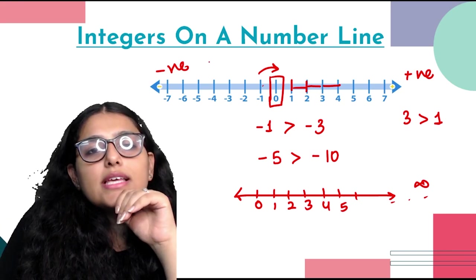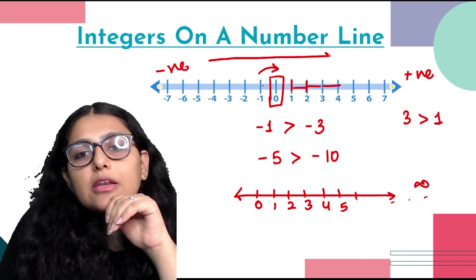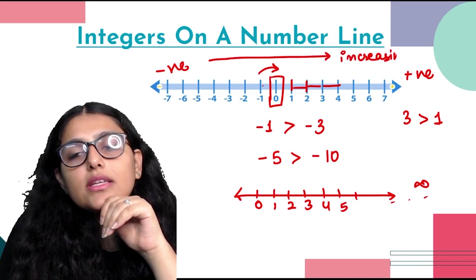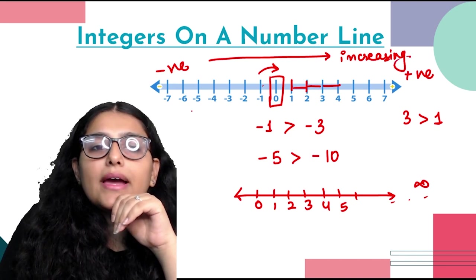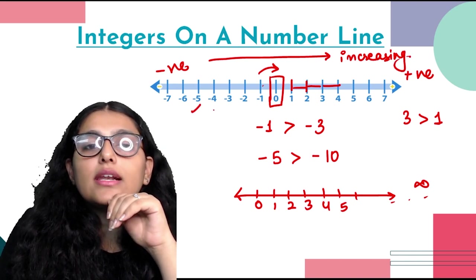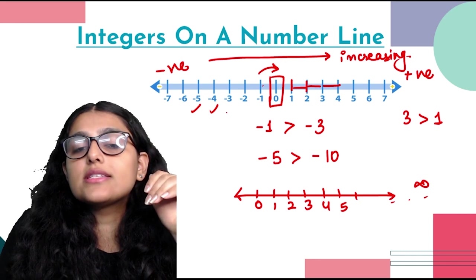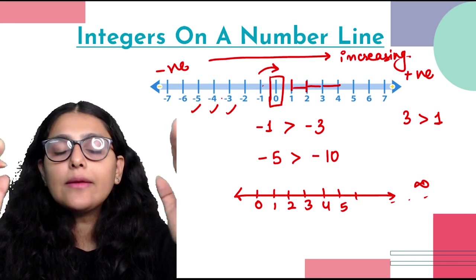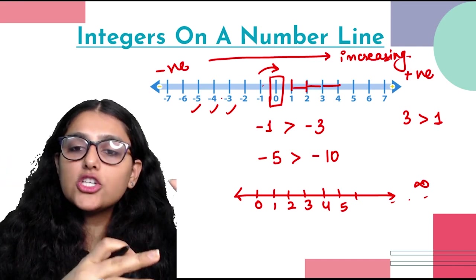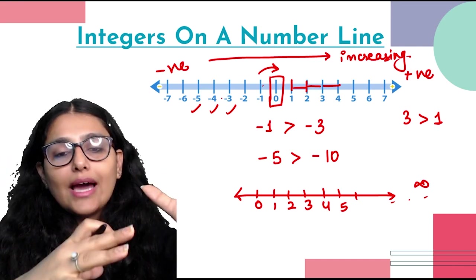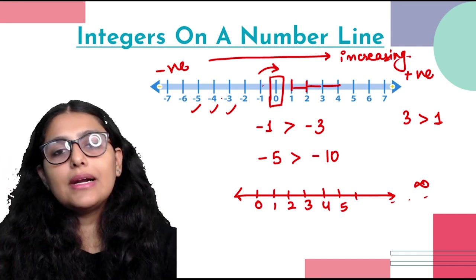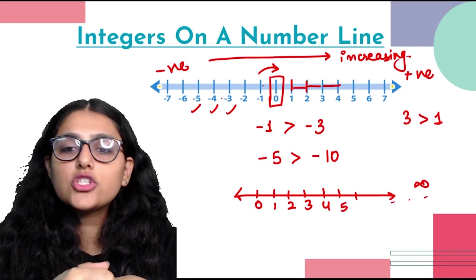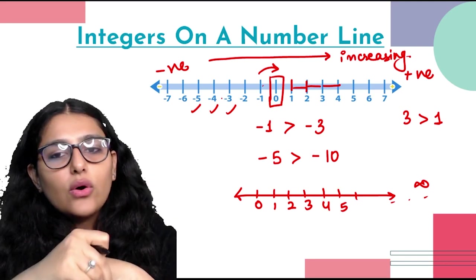As we move right on the number line, numbers are increasing. So minus 5 is less than minus 4, which is less than minus 3. We will now see how to represent addition and subtraction operations on the number line. This is an important topic — short questions may come from it, so please practice all the cases.